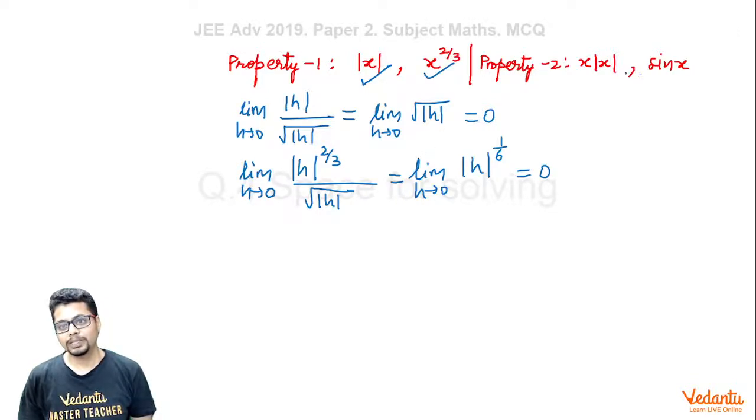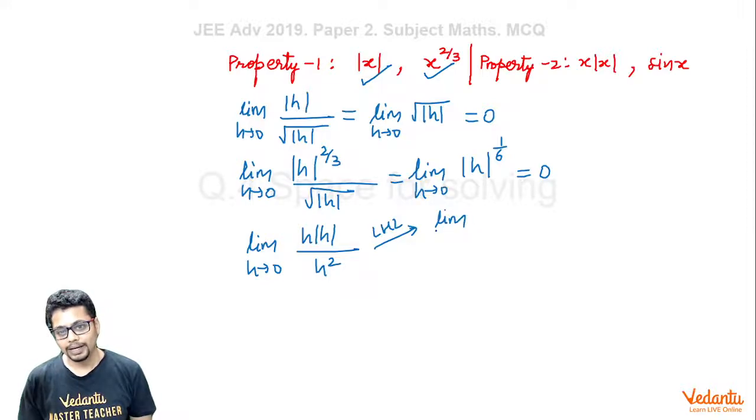Now let's explore whether these functions have Property 2. For f(x) = x|x|, lim(h→0) [h|h| - 0]/h². Consider the left-hand limit: lim(h→0⁻) h|h|/h². Since h < 0, |h| = -h, so h(-h)/h² = -h²/h² = -1.